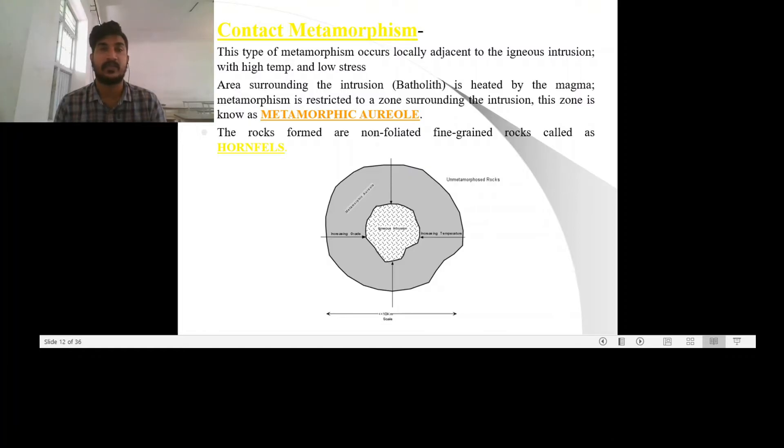And the rocks which are formed in this contact metamorphism are fine grained and non-foliated and they are known as hornfels.